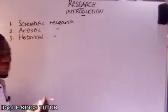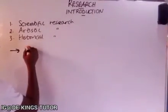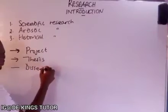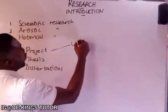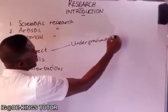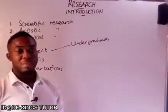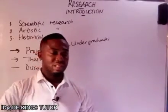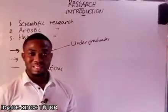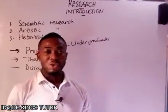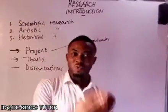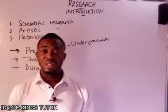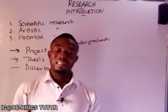For the purpose of this video, we'll be looking at three forms of research as they apply to projects, theses, and dissertations. The project is mostly for undergraduates in their final year, who may be asked to bring topics related to their discipline — whether accounting, management, marketing, banking, or finance. Once in the final year, they are asked to get a topic in their course of study, research a particular problem, and propose a solution. They will be required to submit a topic to a board or lecturer for approval before they proceed.